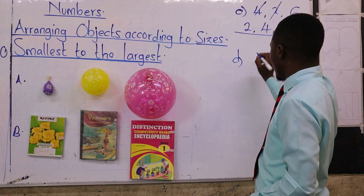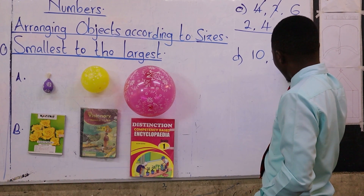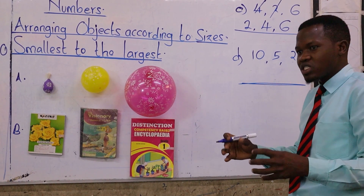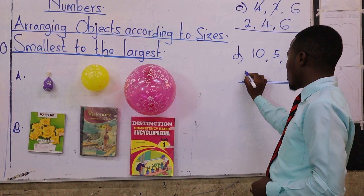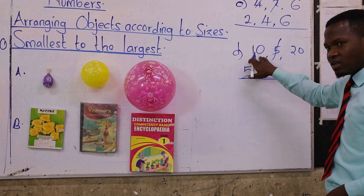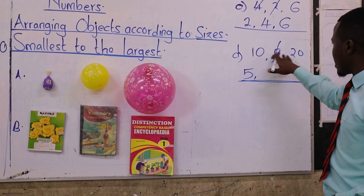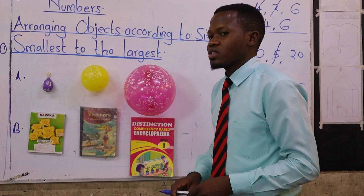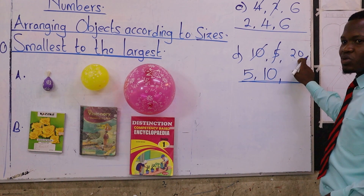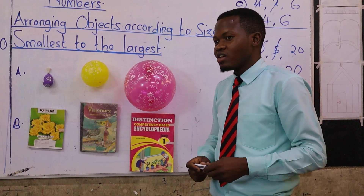Let me give you another example. We have number ten, number five, and number twenty. When arranging these three numbers, which one is the smallest? Number five — very good. So we start with number five. Now remaining with number ten and number twenty, which one is the smallest? Number ten. So the arrangement is: five, ten, twenty. Is it easy or hard? Really easy!